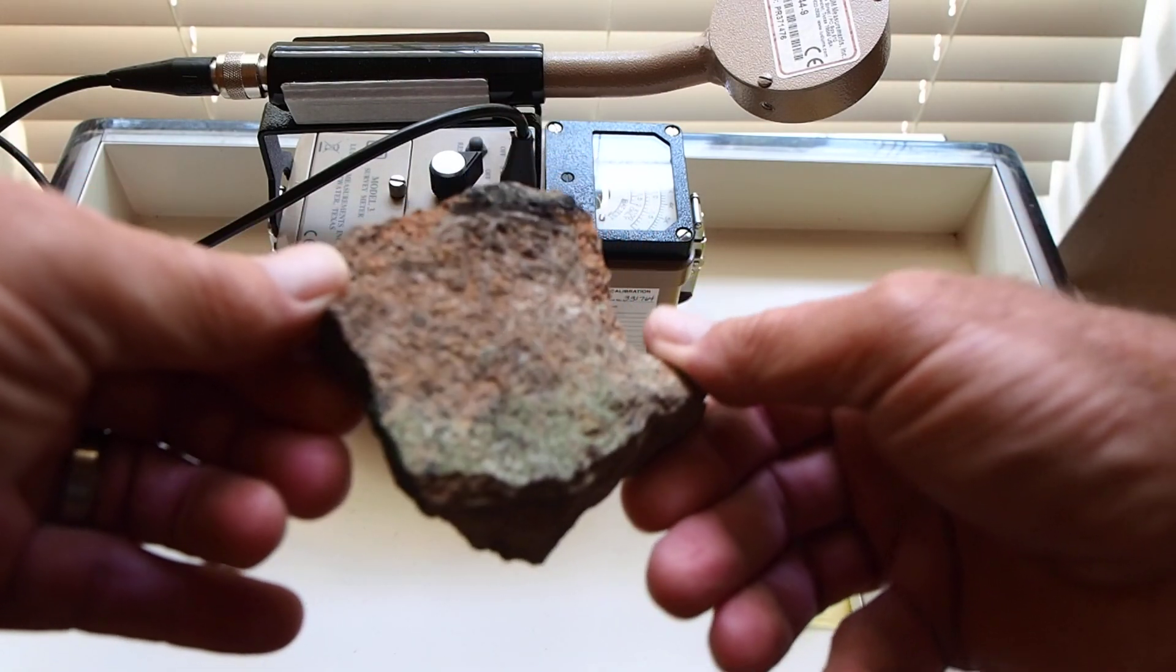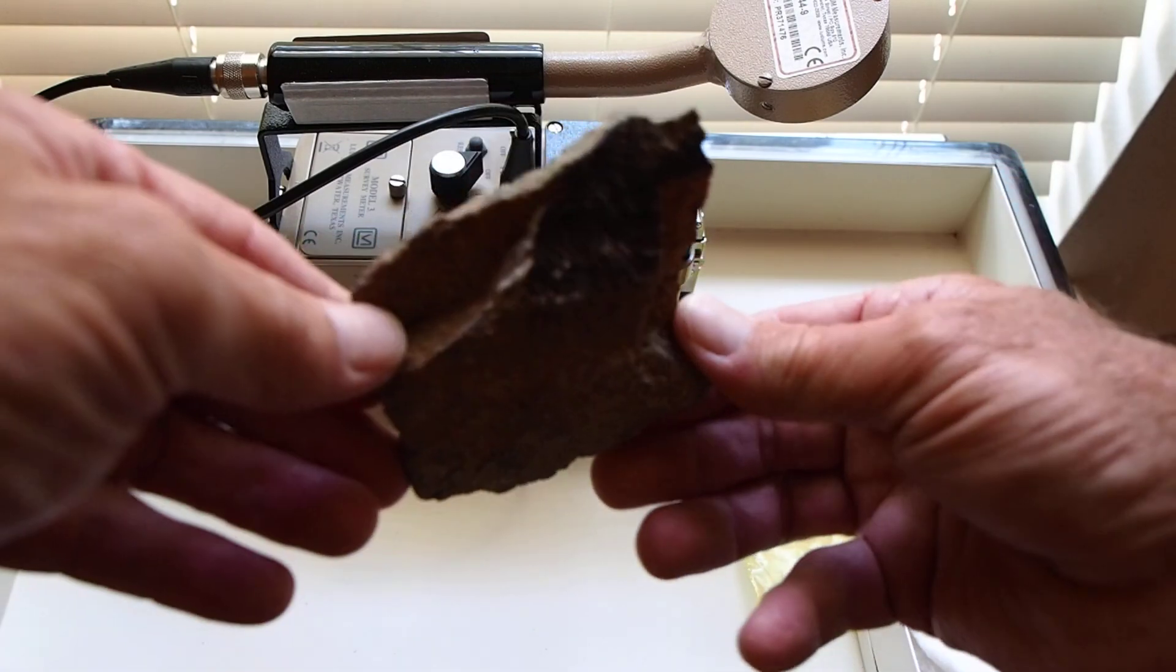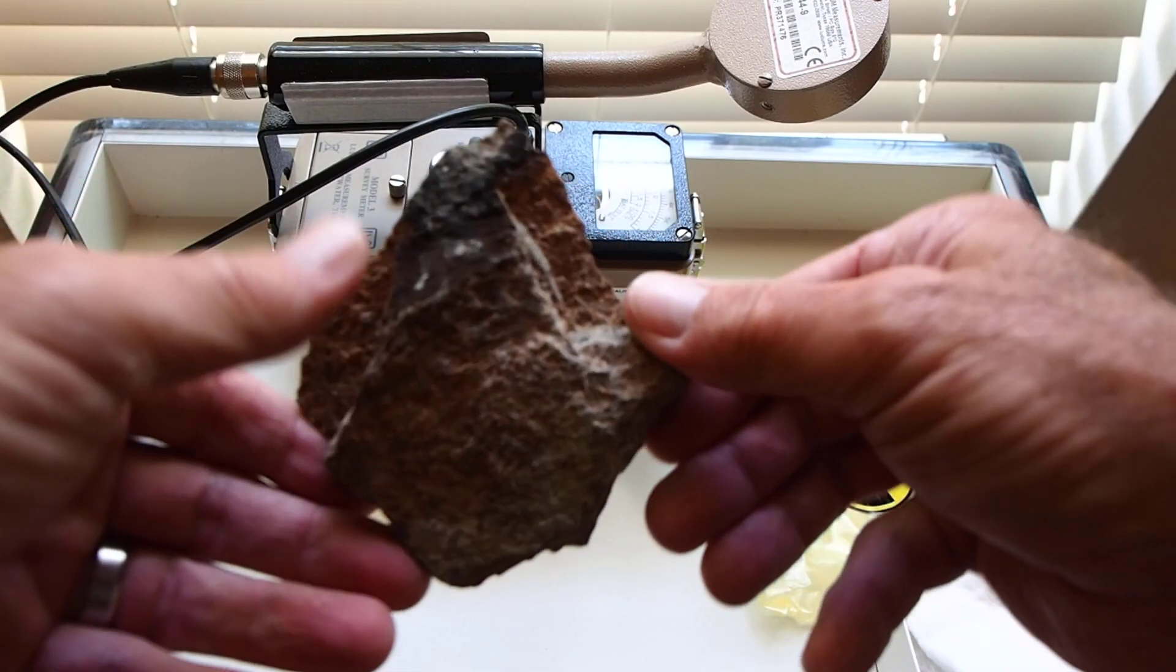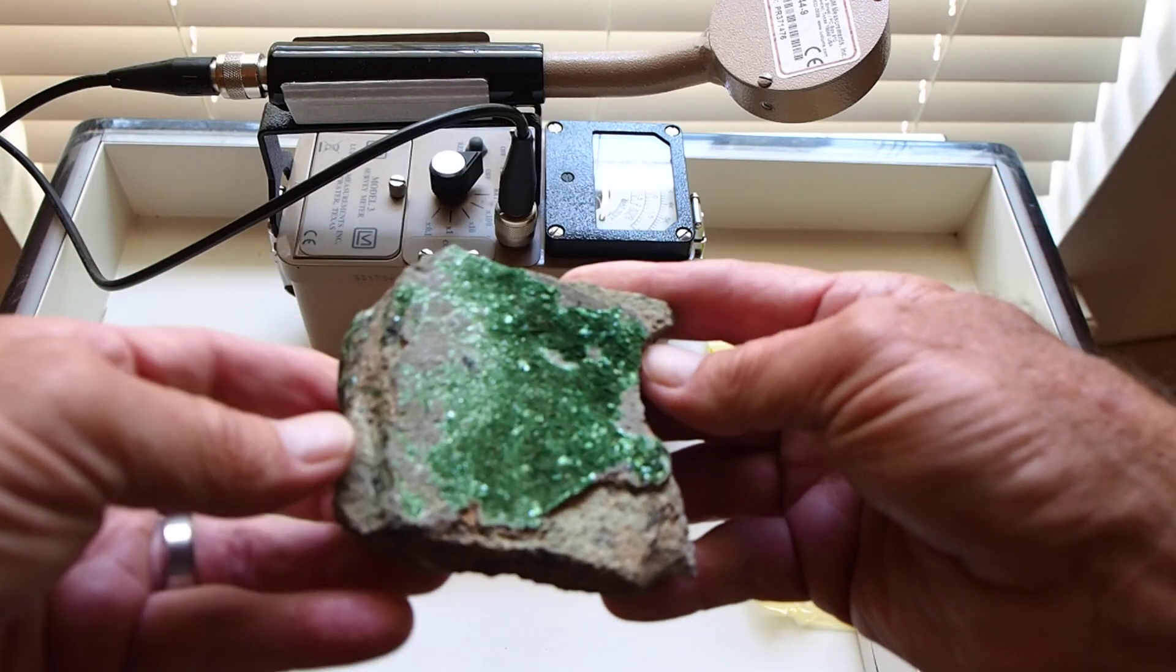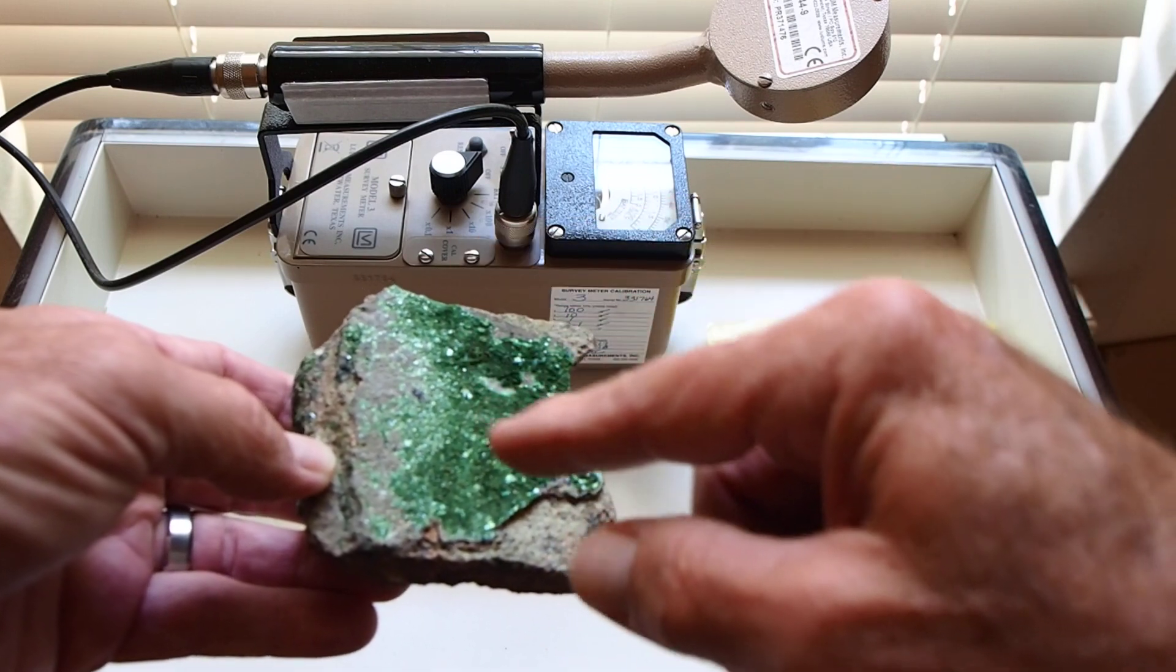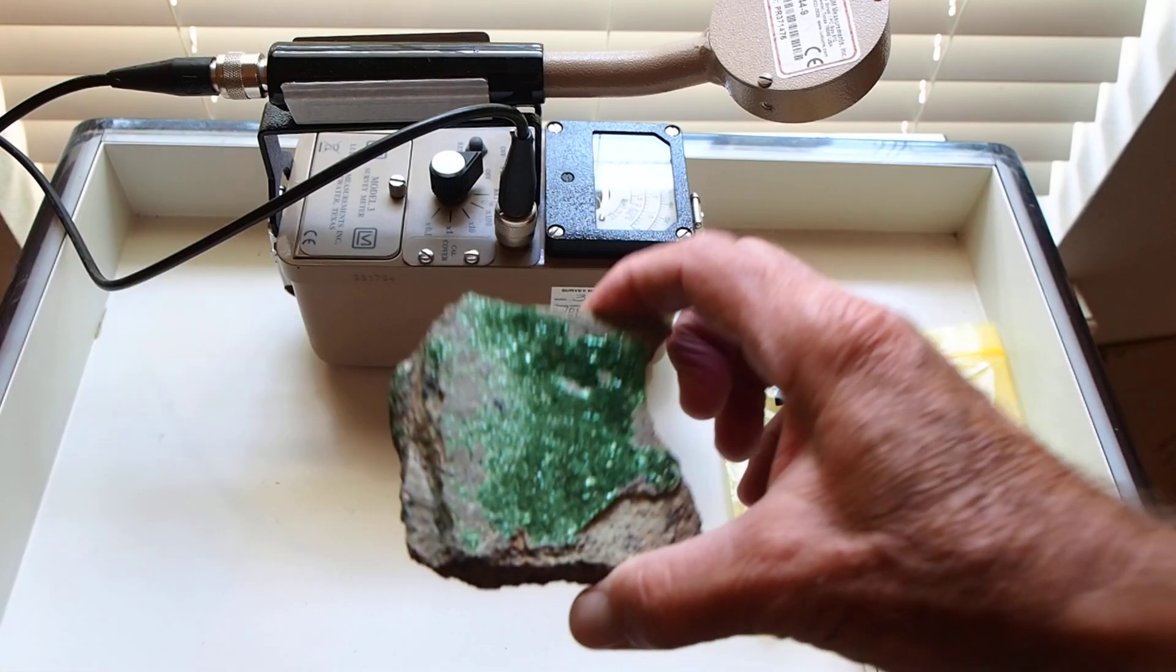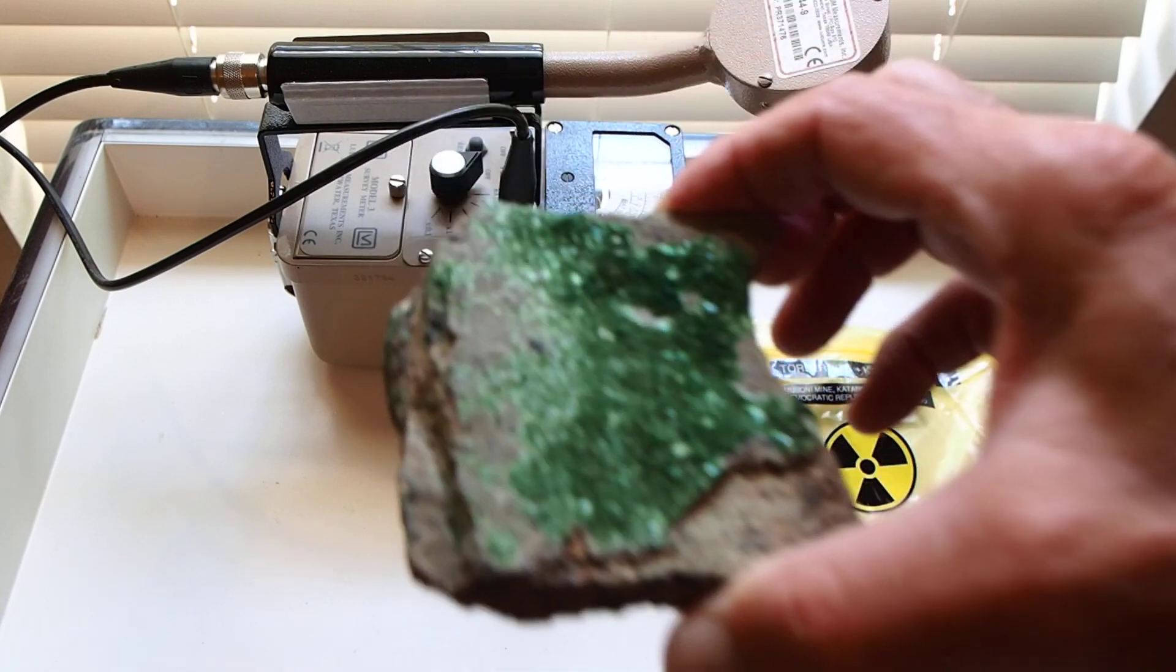The back side is this nondescript rock. I don't know exactly the mineral involved on the back side, but the torbernite and castellite crystals, crystalline structure is here on the front. I'll get a little closer view of that.